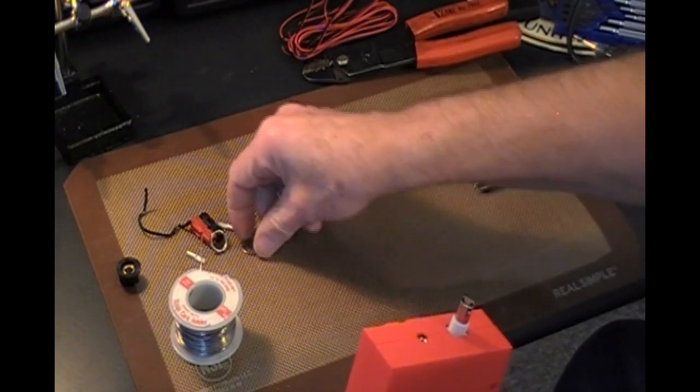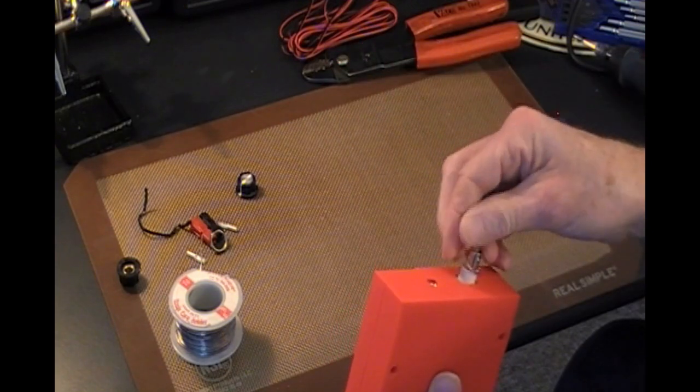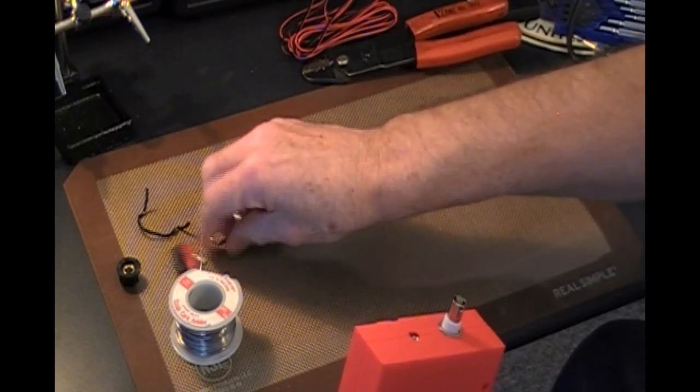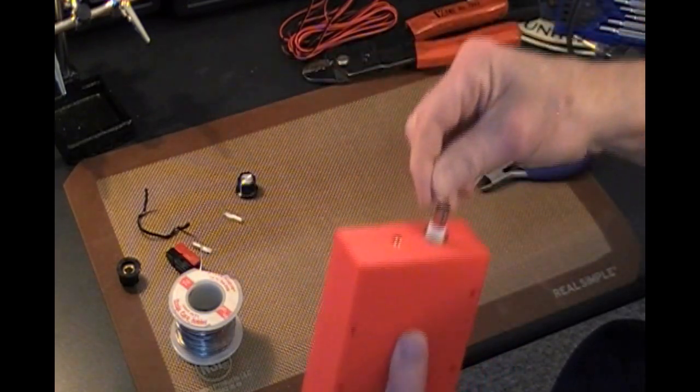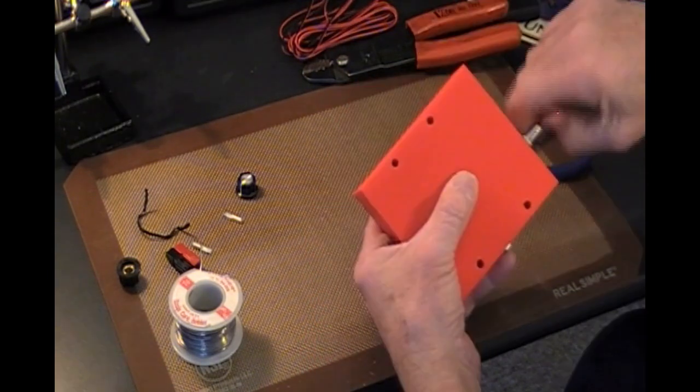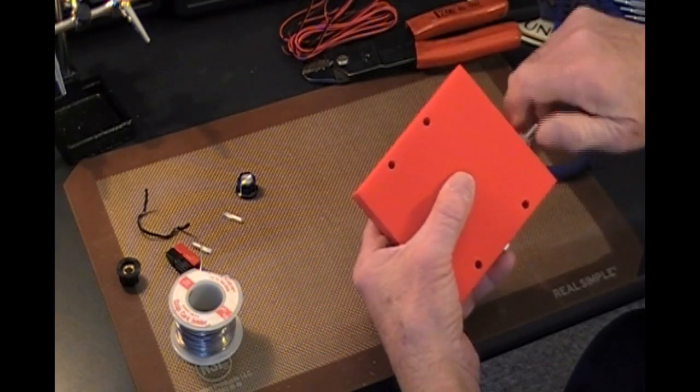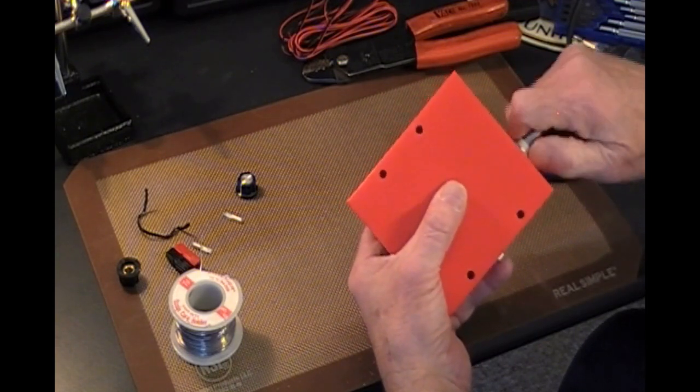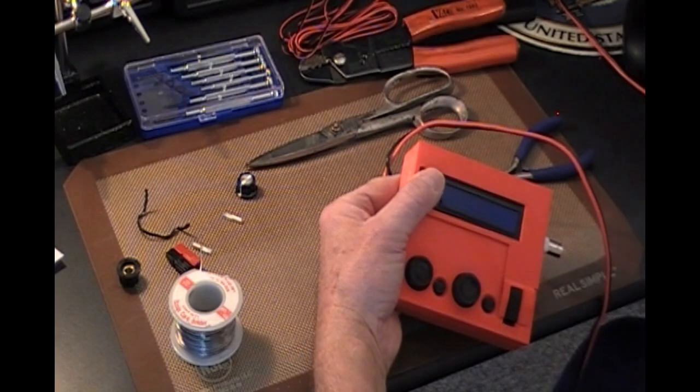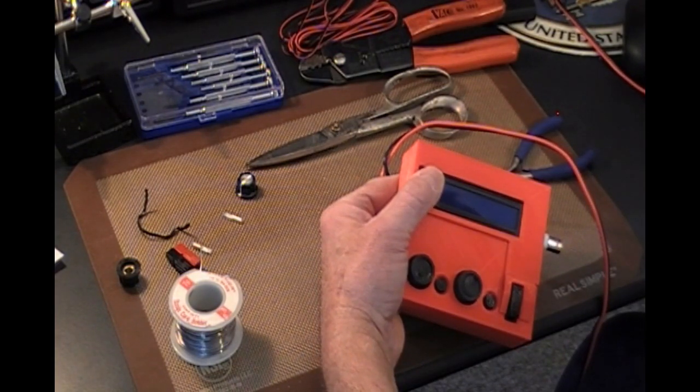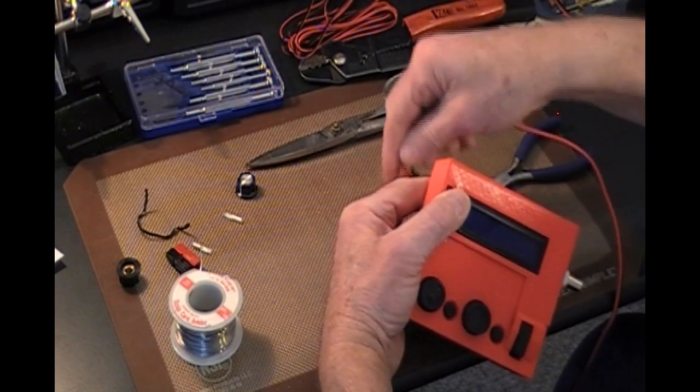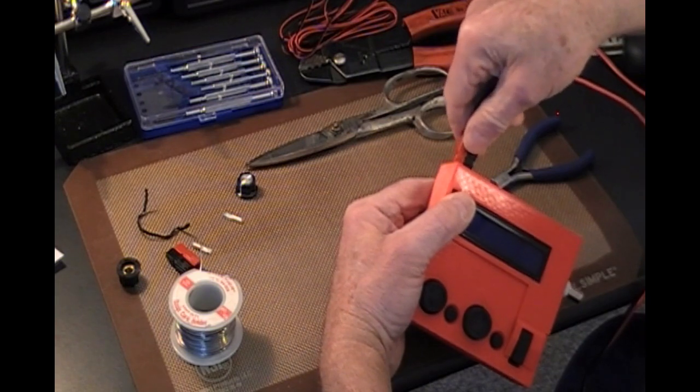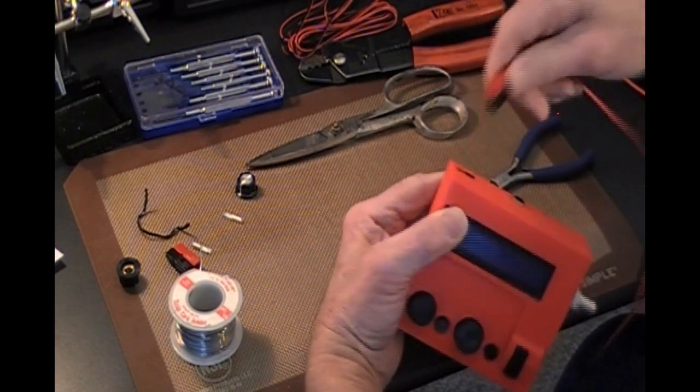And now we want to apply power and make sure all of the functions still work. Before that we're going to put the lock washer and the nut back on the antenna jack. Tightened it hand tight and then just gave it a little bit of a tightening with a wrench. And I have a 12 volt bench power supply here so we're going to plug it in and make sure that it powers up.